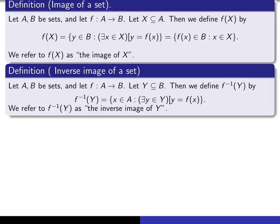We call it the inverse image of Y. So to say that an element x is in the inverse image is to say this: there exists a y in that set Y such that y is equal to f of x.